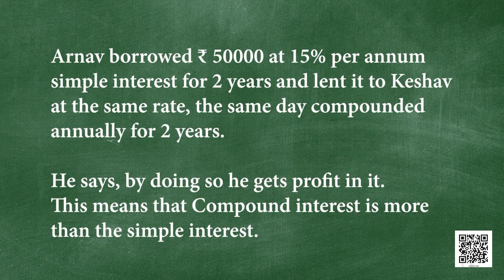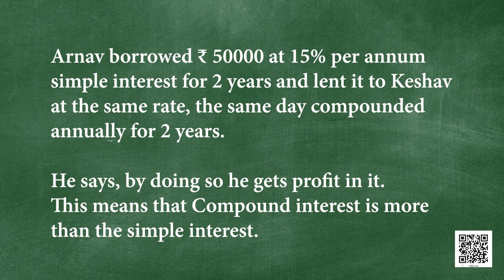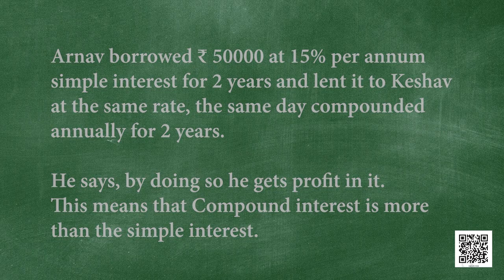Arnav borrowed rupees 50,000 at 15% per annum simple interest for 2 years and lent it to Kesho at the same rate compounded annually for 2 years. By doing so, he gets a profit, meaning compound interest is more than simple interest. Let us solve a problem to understand this concept better.